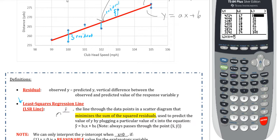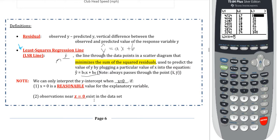The least squares regression line is defined with the symbol y-hat. It's going to be in the form of b1x plus b-sub-0, which is the general form for regression analysis. However, for more simplistic terms, it's y-hat equals ax plus b. The two values we're going to find are a and b: a represents the slope of the graph, and b represents the y-intercept of the graph.